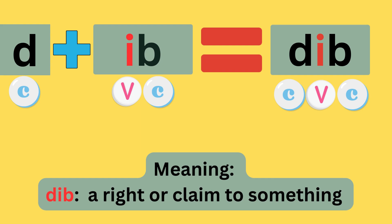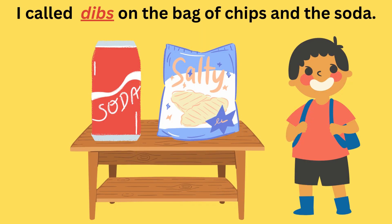D plus -ib equals dib. The sounds are: d-i-b — dib. The meaning is a right or claim to something. I call dib on the bag of chips and the soda.